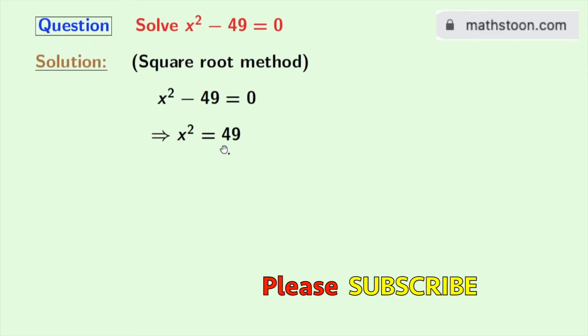Now as 49 is equal to 7 squared, so we will take it here. Now if we take square roots on both sides, we get square root of x squared is equal to square root of 7 squared. Taking square roots, we get x is equal to plus minus 7.